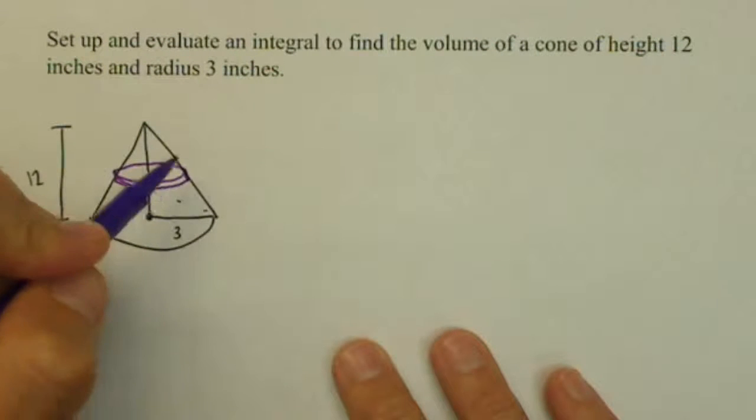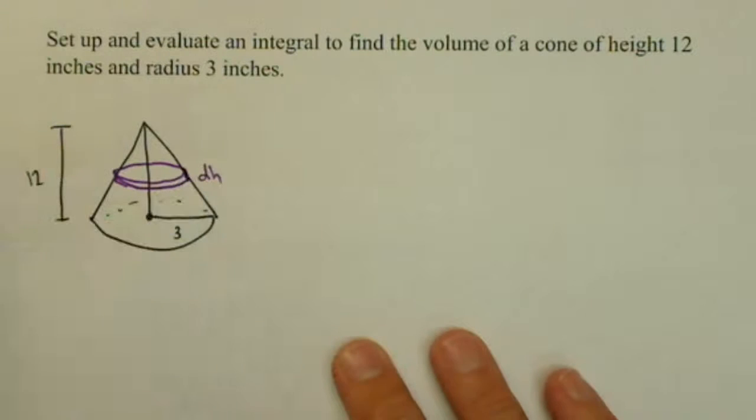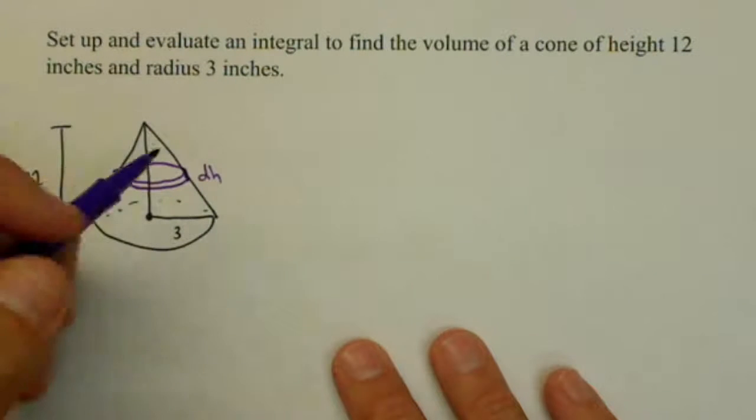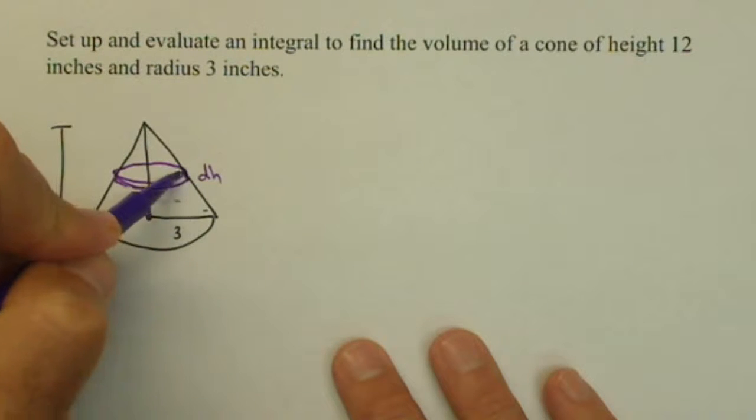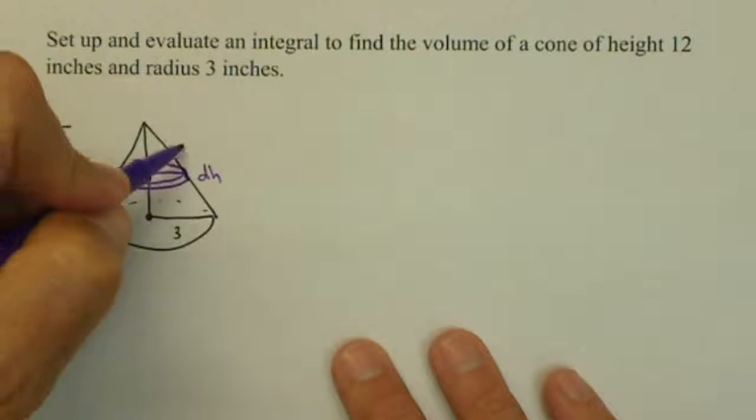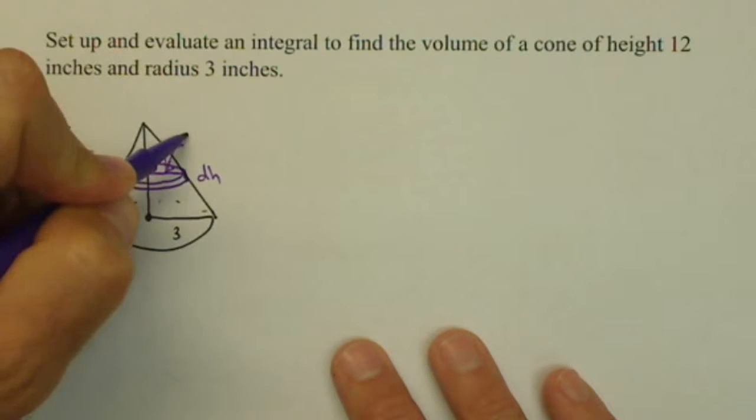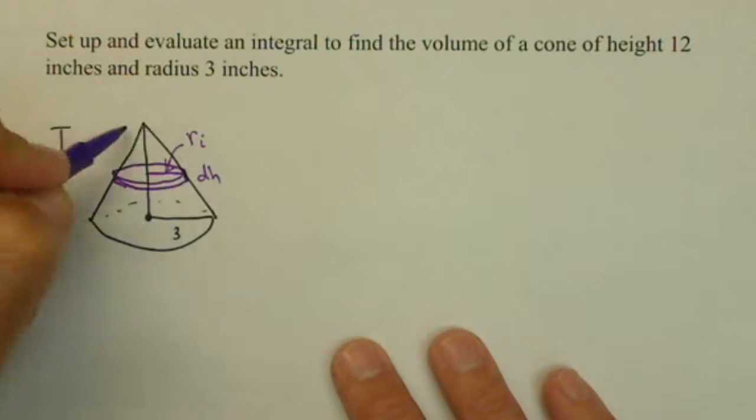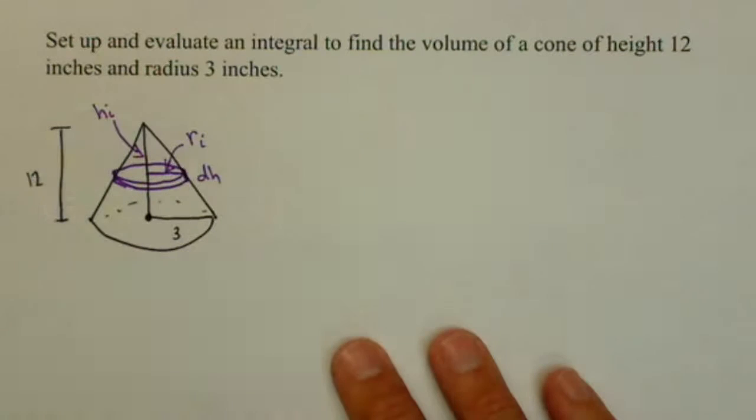But let's call it dH for a change in height. Now, this slice has some radius. Let's call that radius there R sub i. And it has some height or distance from the top. We'll call it H sub i.